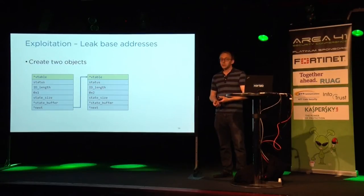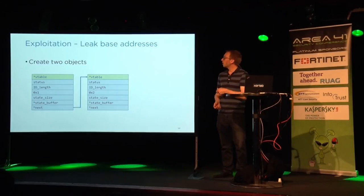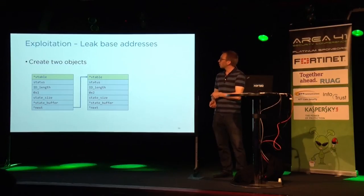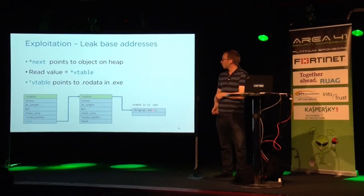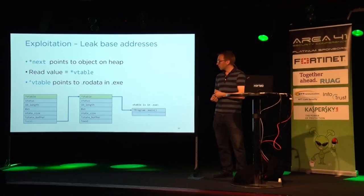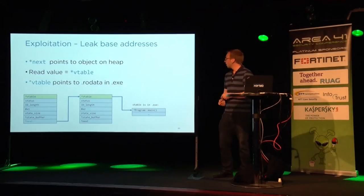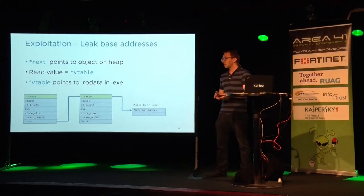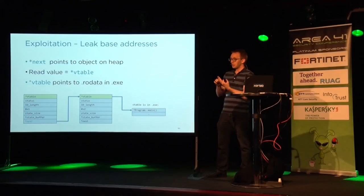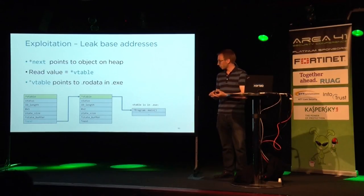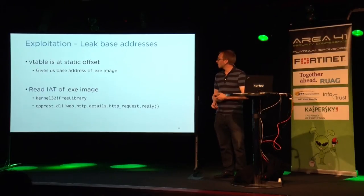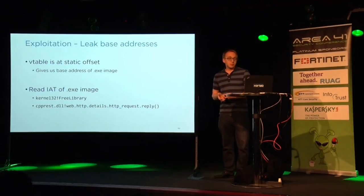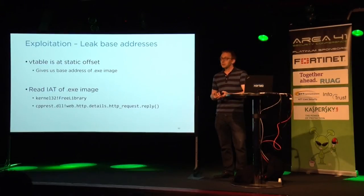How do we leak base addresses? If we have two objects, the next pointer points to the next object, which at offset zero has the V-table. We follow this V-table pointer and find the address of the main function in the executable. Since we know the executable, we can calculate the offset — we know the static offset of the main function — so we can derive the randomized base address, giving us the image base address.